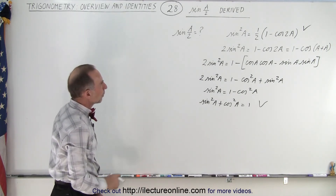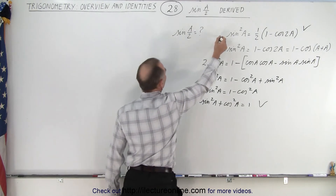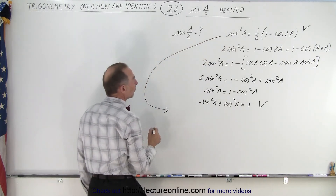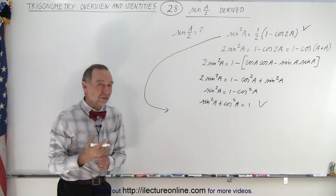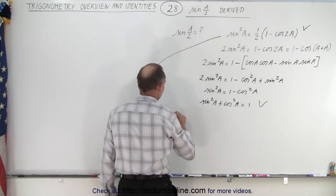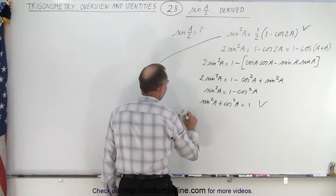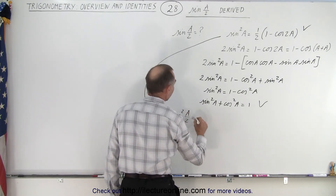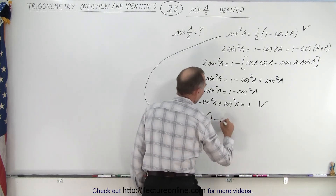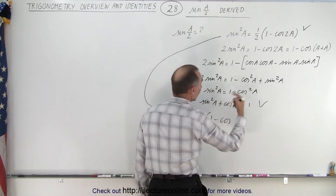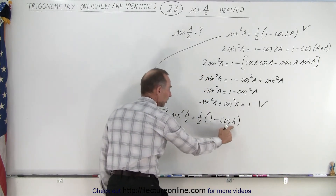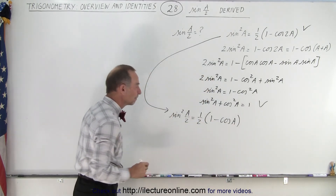All right, if that's true, what we can do is take this expression and instead of writing the sine squared of A, we write the sine squared of a half angle. So we're going to divide that angle by 2. We can write that the sine squared of A over 2 is therefore equal to one half times one minus the cosine of 2A over 2, or simply A. We take the half angle of both sides.